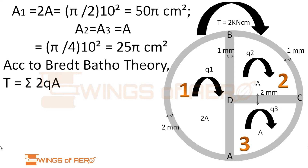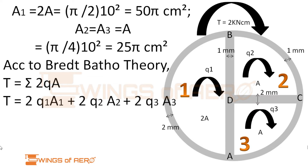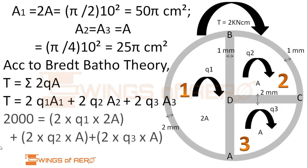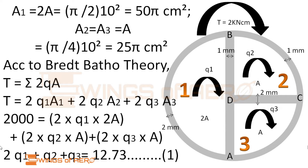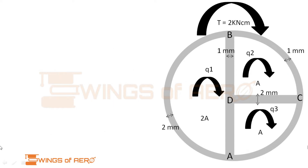Recalling the Bredt-Batho theory, T equals the summation of 2QA. Since we have 3 different cells, we rewrite this as T = 2Q1·A1 + 2Q2·A2 + 2Q3·A3. Substituting T = 2000 N·cm and the values of A1, A2, A3, and simplifying, we get: 2Q1 + Q2 + Q3 = 12.73. Name this as Equation 1.